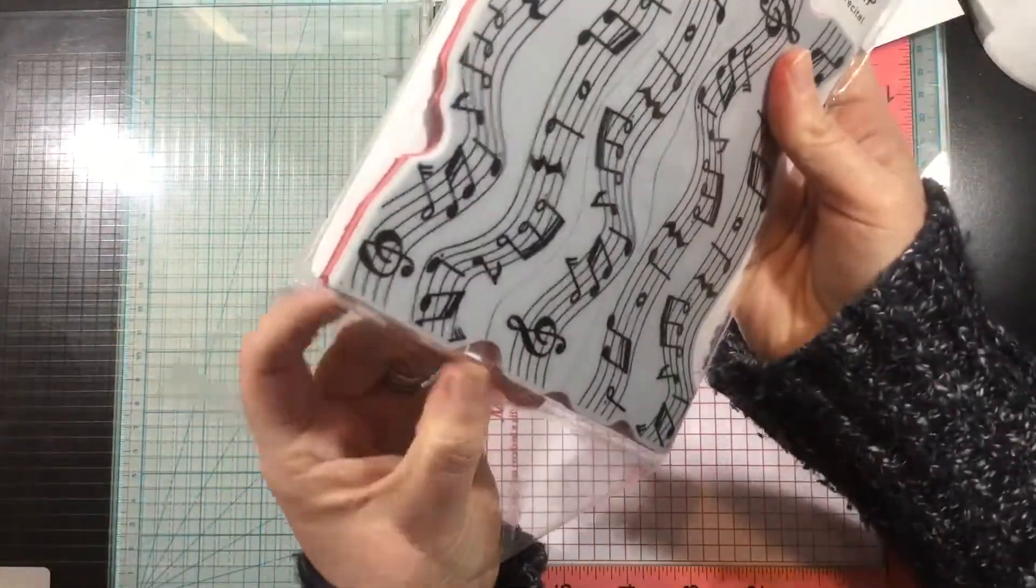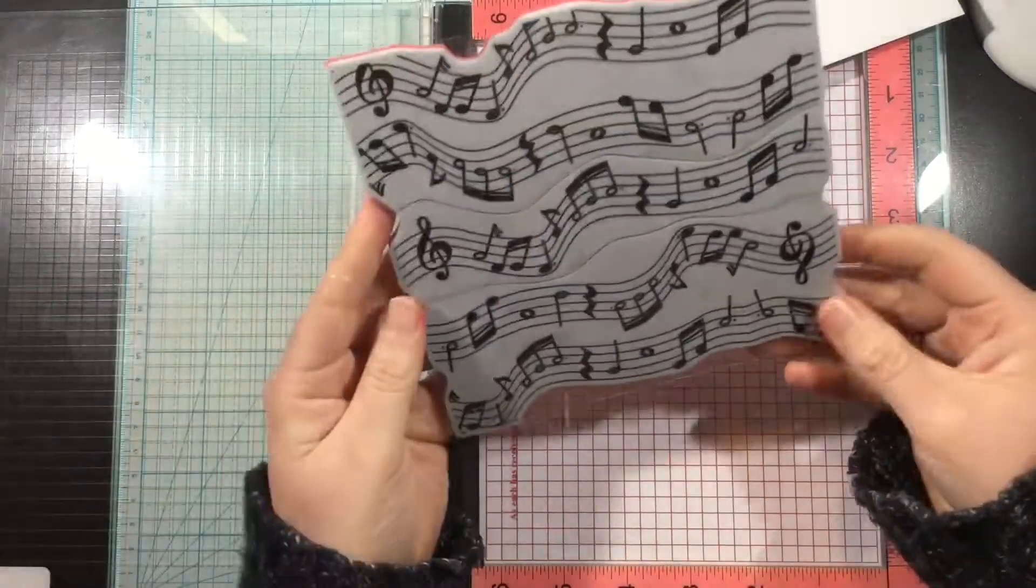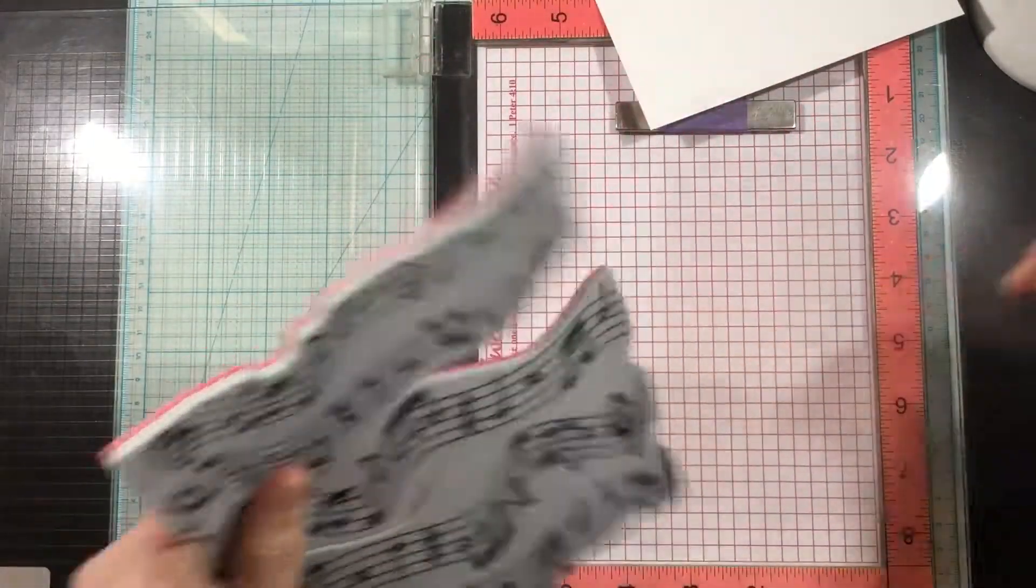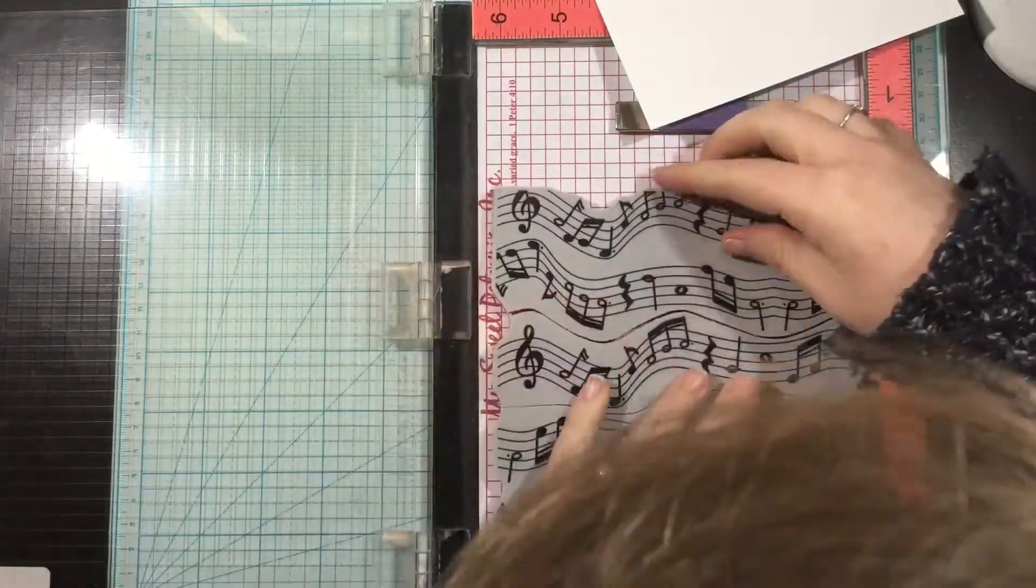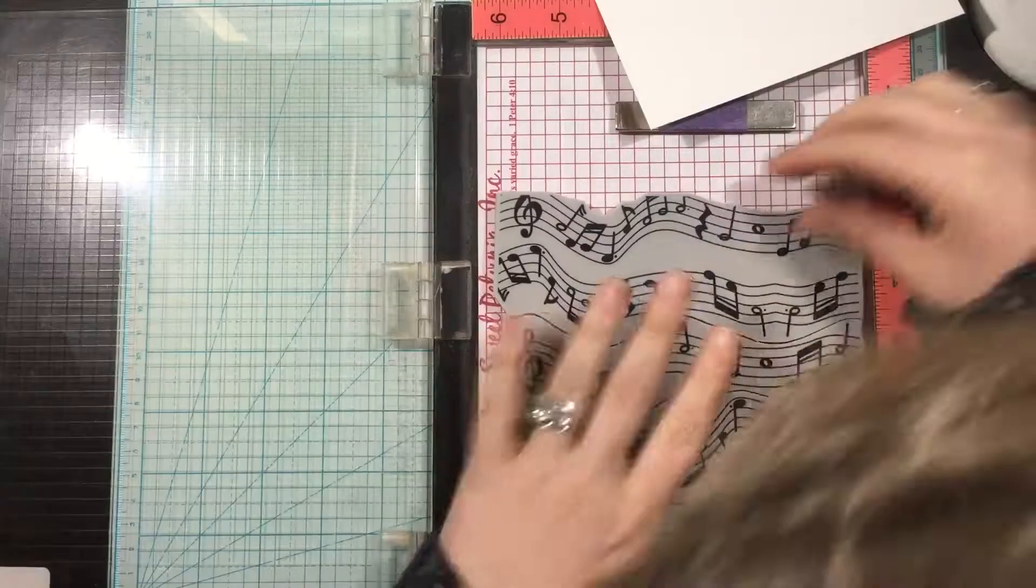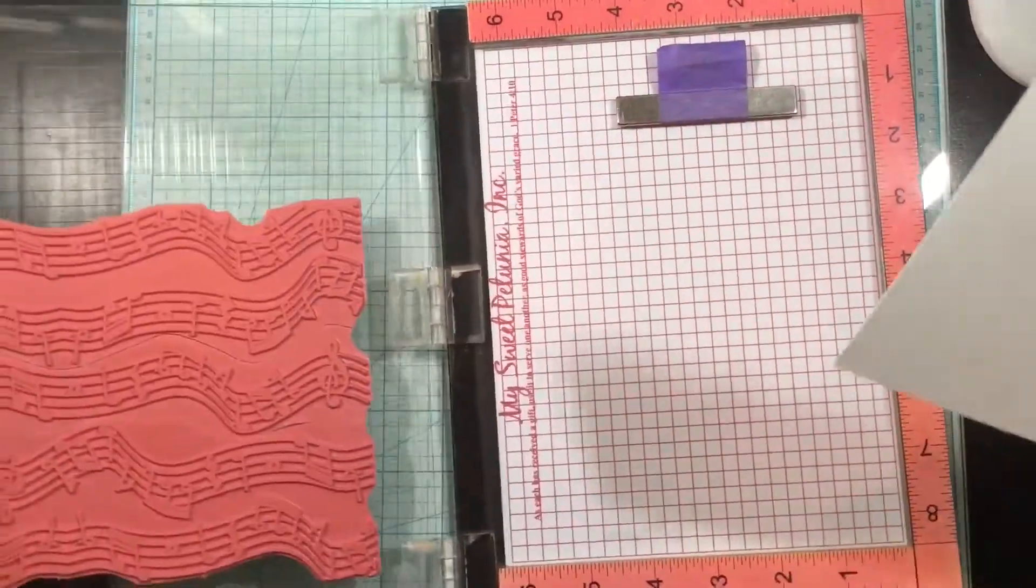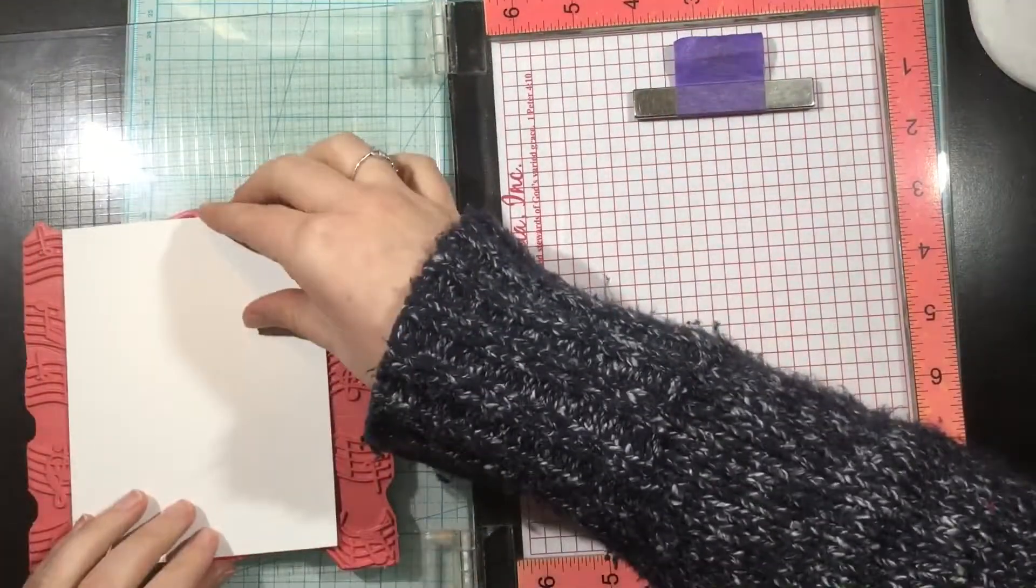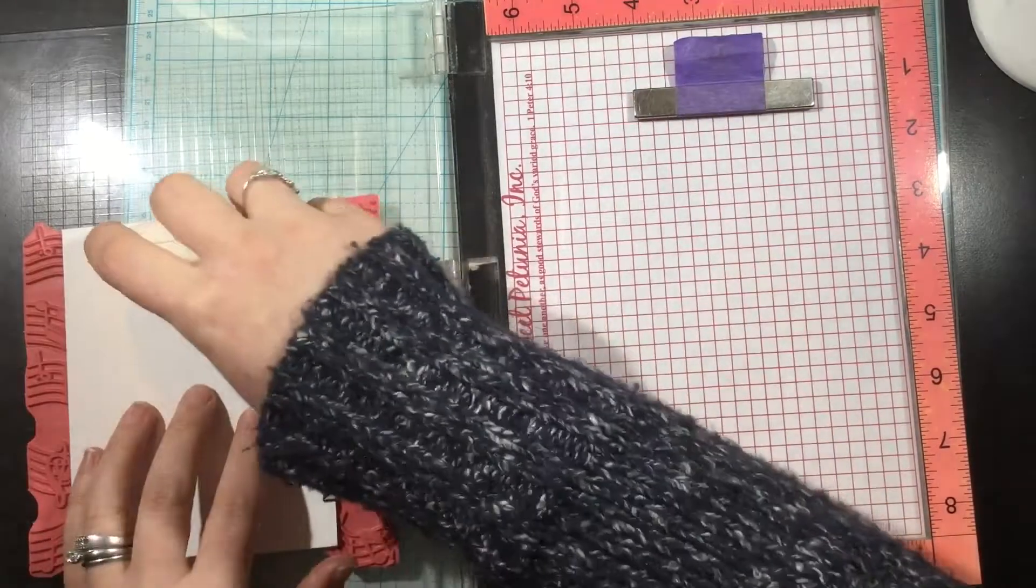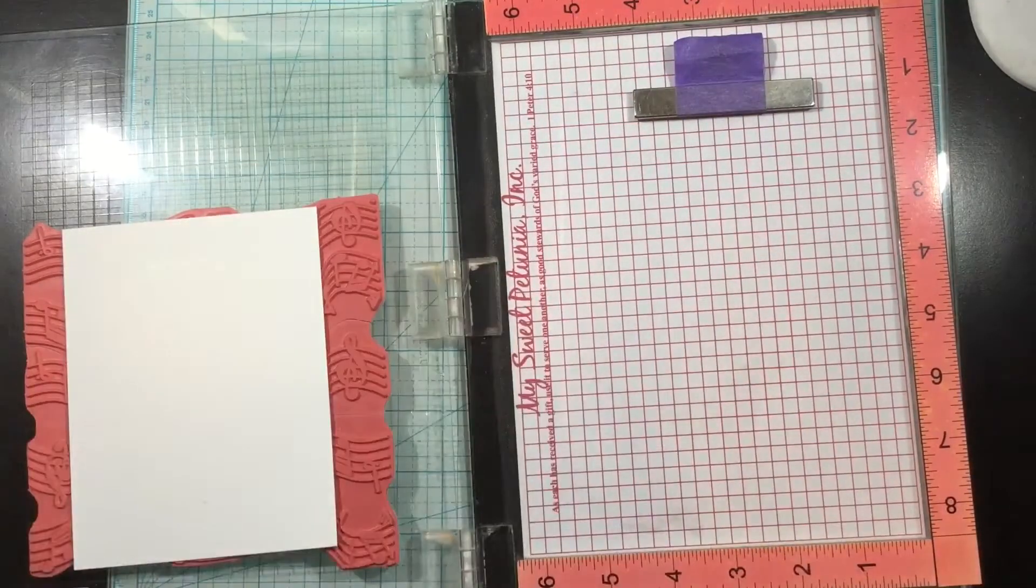To start off, I'm going to use the piano recital stamp set and mount that onto my MISTI. Since this is a red rubber stamp, you want to remove the excess mouse pad or paper pad from your MISTI. Then I'm going to lay a piece of stark white cardstock from Simon Hurley Create over top of where I want it to be on that stamp.